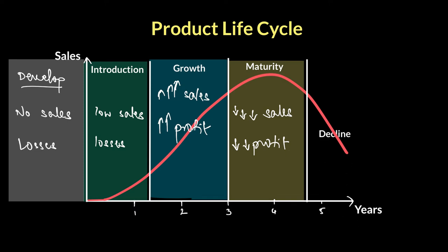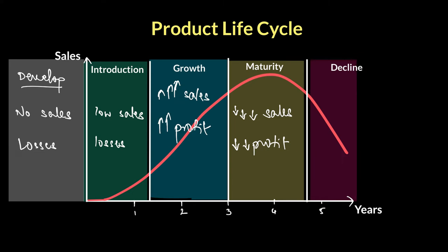We call that stage decline, shown by the red area — alarm bells. Businesses need to do something about it. Smart businesses will realize when their sales start to slow down — not when you've already reached the decline stage. All products will go through these stages, and these are the characteristics of each of those stages.